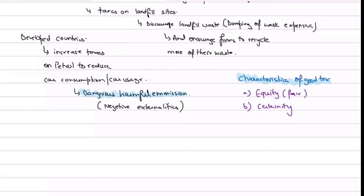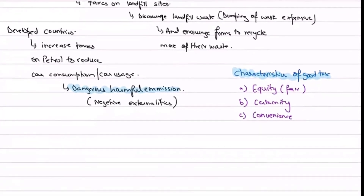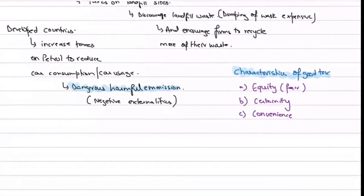Another characteristic is convenience — it should be easy and convenient for people to pay taxes. It shouldn't be difficult. People should be able to pay easily, for example electronically or by bank transfer.